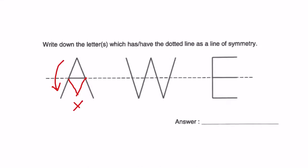For W, same thing. This part here, if folded, it will come here and there's nothing that overlaps. So W is out. Let's look at the last option, which is letter E. Cutting it across horizontally like this, when folded, this point matches this point. So we can say that letter E is the answer.